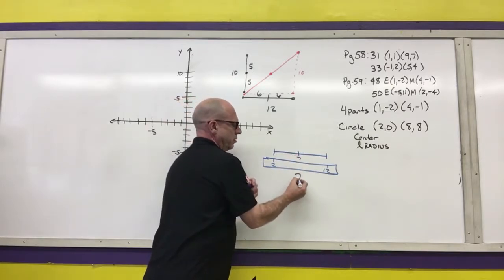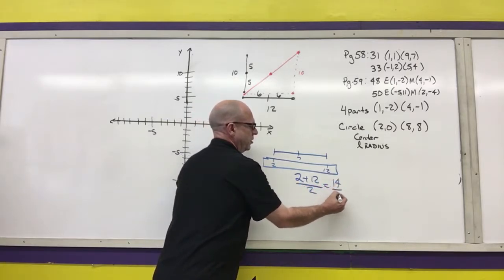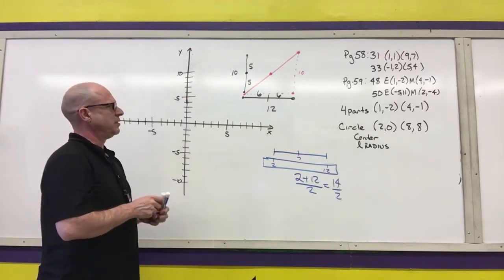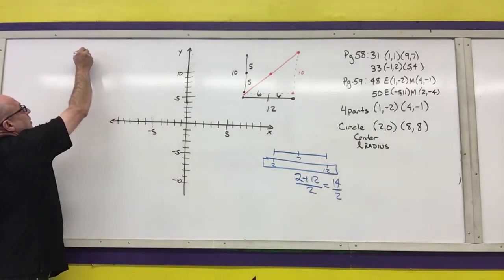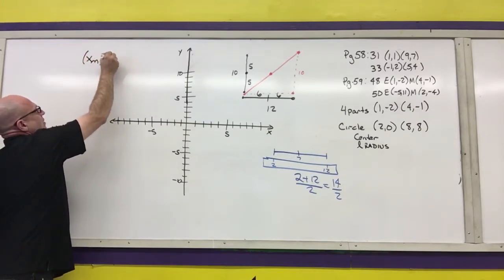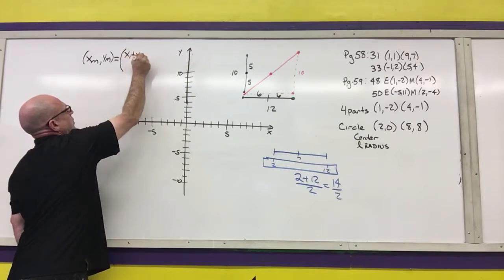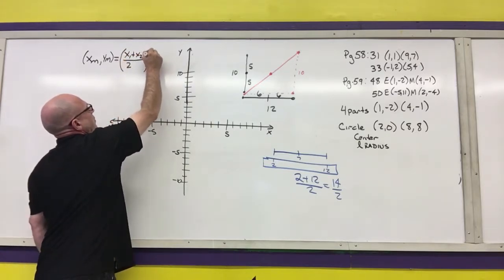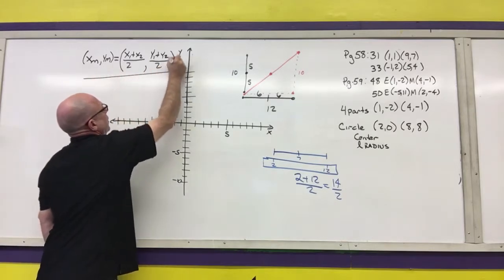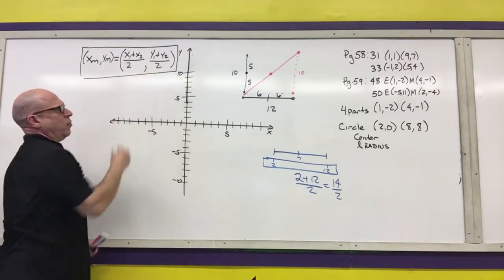The way we found that was we took 2 plus 12 and divided that answer by 2, which is 14 over 2. We're going to do the exact same thing to find the midpoint of a set of points. The x of the midpoint, comma, the y of the midpoint is equal to the average of the x-coordinates — x1 plus x2 over 2 — and then the average of the y-coordinates — y1 plus y2 over 2. This is the midpoint formula. Notice that you get an x-coordinate, which is a number, and a y-coordinate, which is a number.